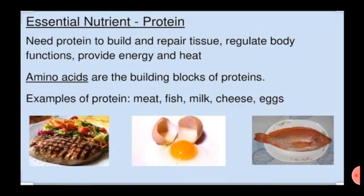Examples of protein are milk, meat, fish, cheese, and eggs. Protein is a macronutrient that is essential to building muscle mass. It is commonly found in animal products, though it is also present in other sources such as nuts and pulses.